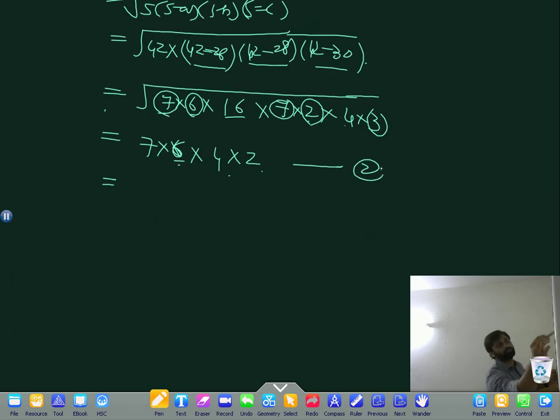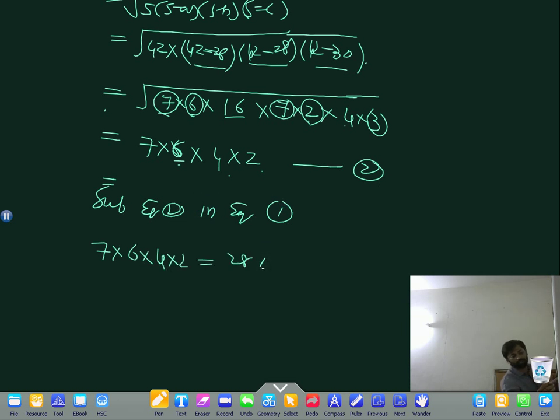Substitute this value. Substitute equation 2 in equation 1. So 7 into 6 into 4 into 2 equals 28 into DM. 7 times 4 is 28, 6 times 2 is 12. So DM equals 12 centimeters. This is your answer.